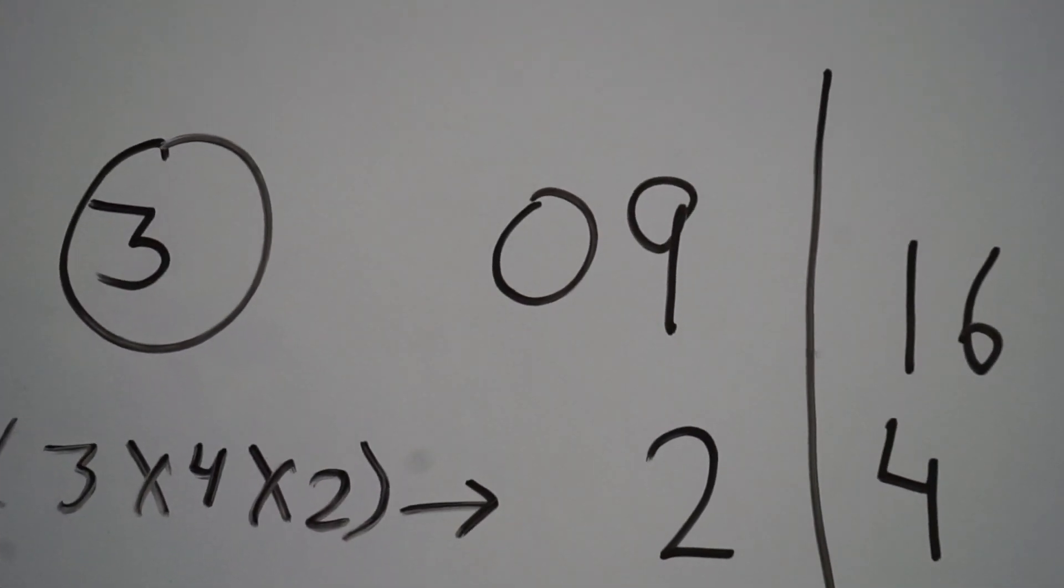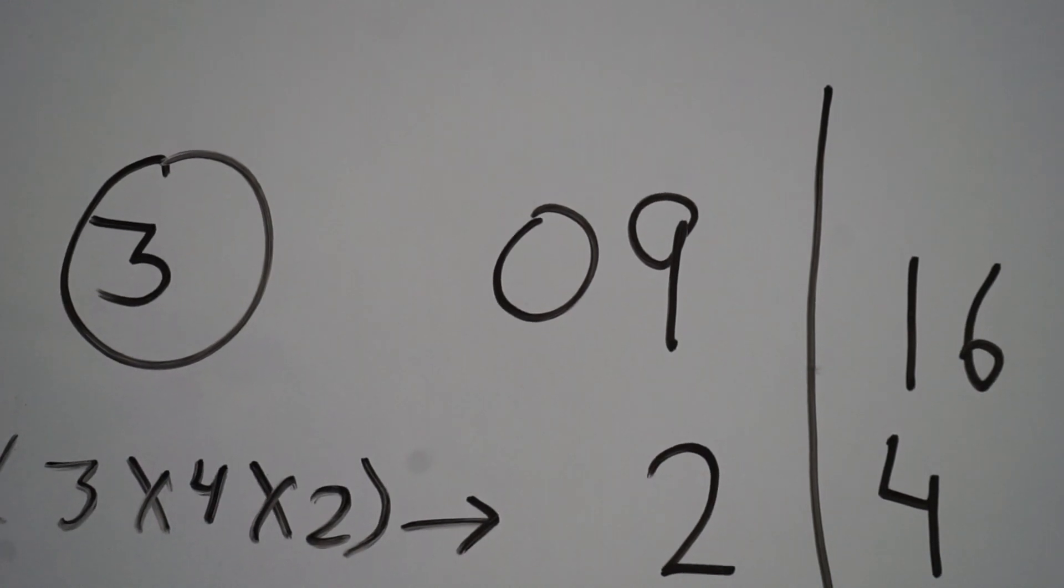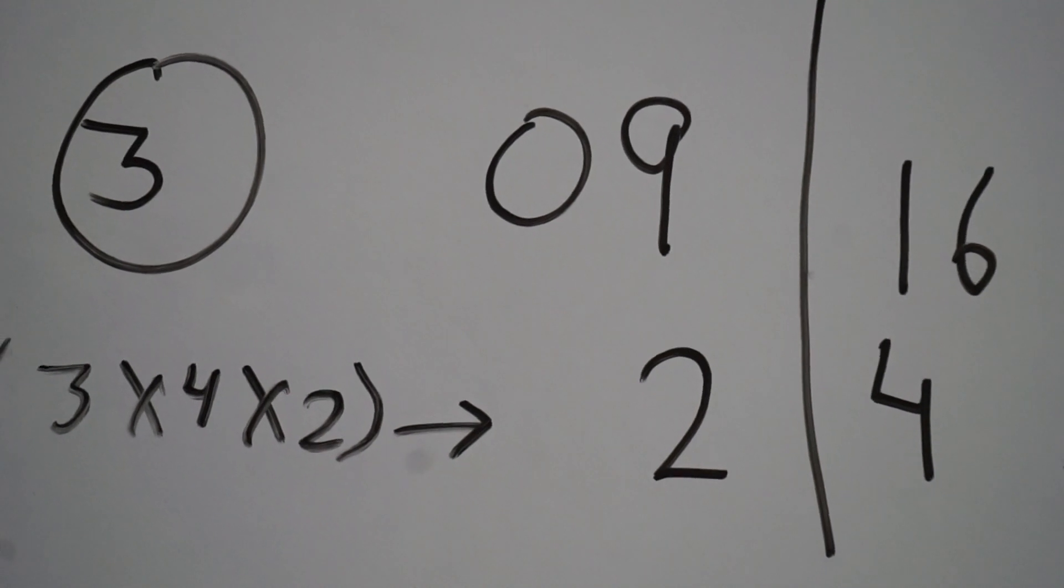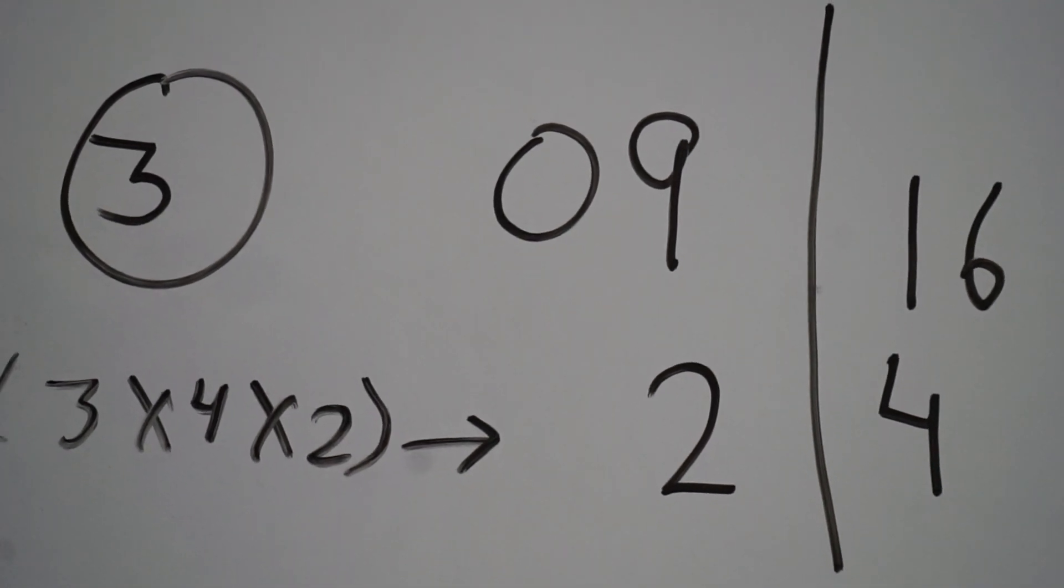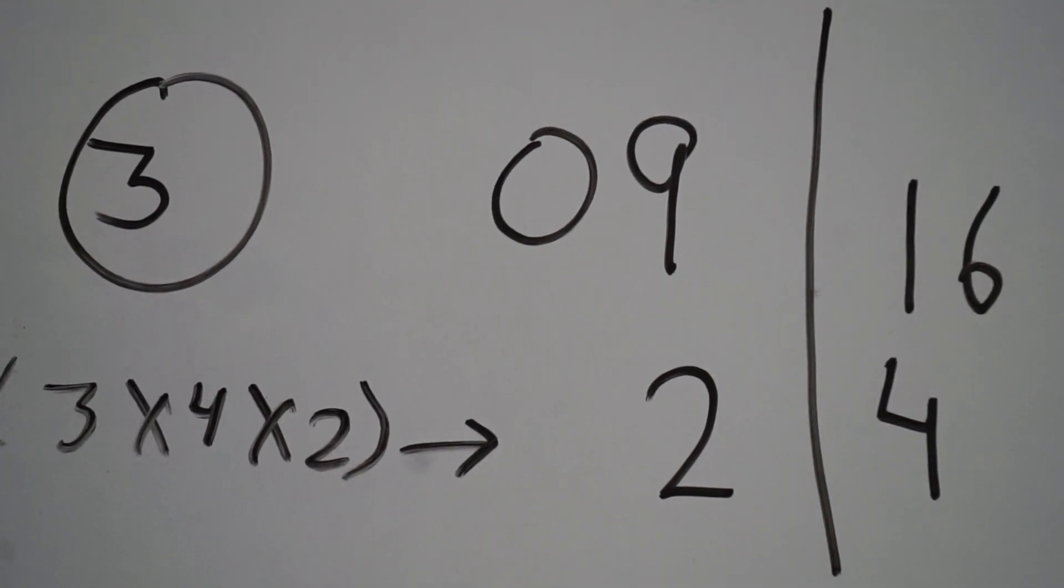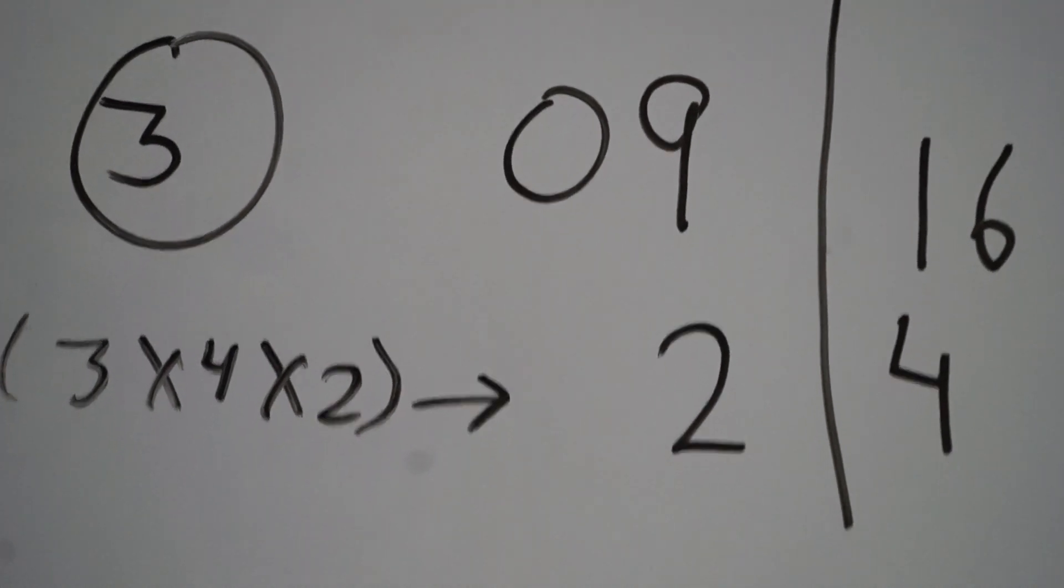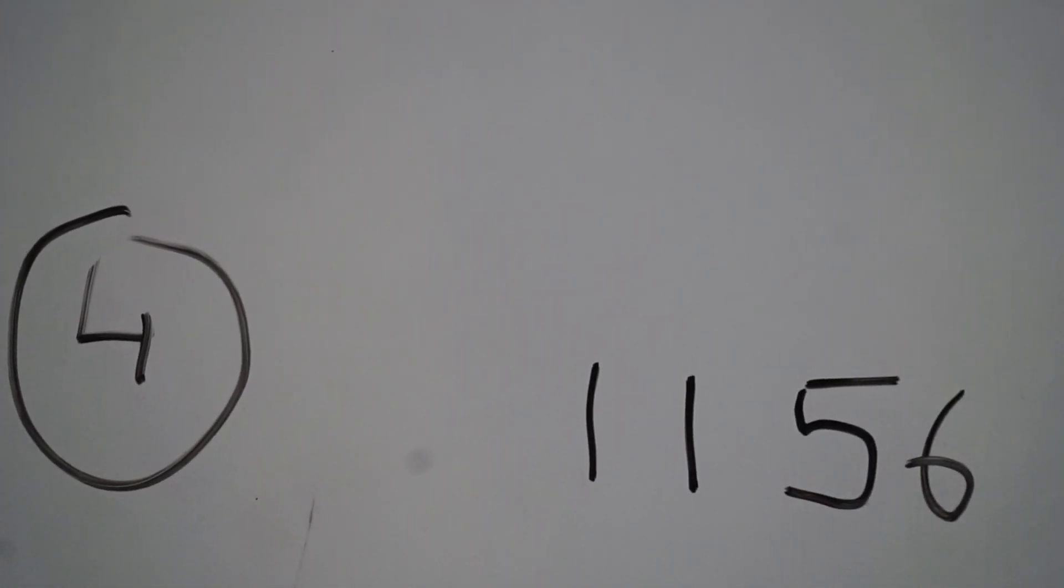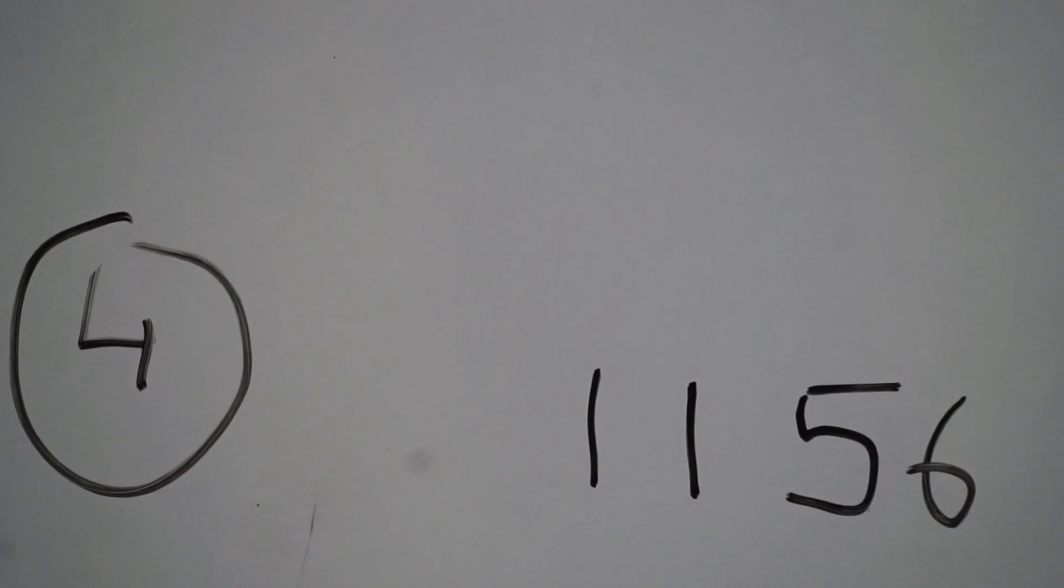Now you can see 3 into 4 into 2 is 24, and it is written here in this manner. You have to perform it similarly and exactly. Now add the numbers to get the square of your number. Here you can see the square of 34 is 1156, which you are getting. We can take one more example.